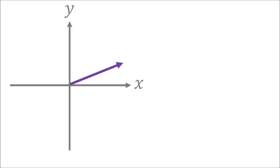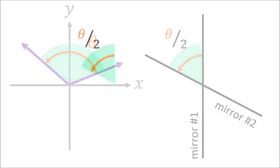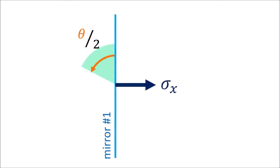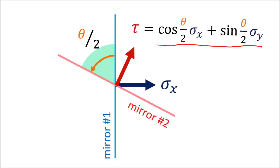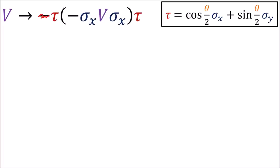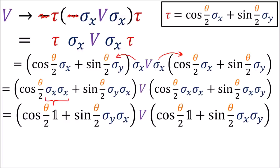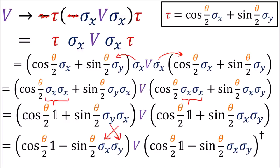Now, what if we wanted to rotate our polyvector by an arbitrary angle theta? We would need two mirrors separated by an angle of theta over 2. We could start with reflecting along the x-axis, then use another reflection vector angled at theta over 2 compared to the x-axis. When we do these two reflections, the negative signs cancel. After distributing, the sigma x squareds become identity matrices, and we can swap the order of these sigmas by changing the sign in front. We can also write the right side term as the Hermitian conjugate of the left side term, since the Hermitian conjugate swaps the order of the sigmas.